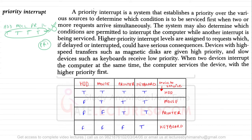Higher priority interrupt levels are assigned to requests which, if delayed or interrupted, could have serious consequences. For example, CPU sensors reporting heating issues have the highest priority because an overheated system can damage the CPU or other components. Devices with high-speed transfer such as magnetic disks are given high priority, while slow devices such as keyboards receive low priority.